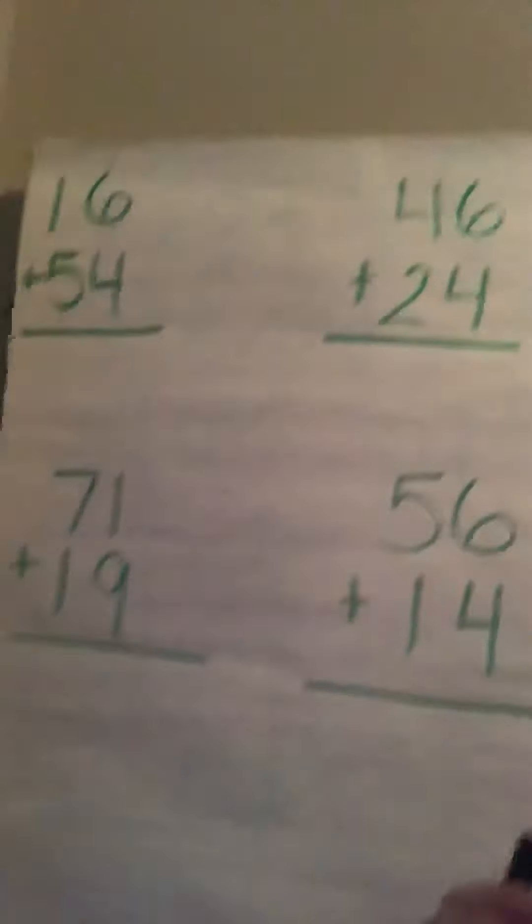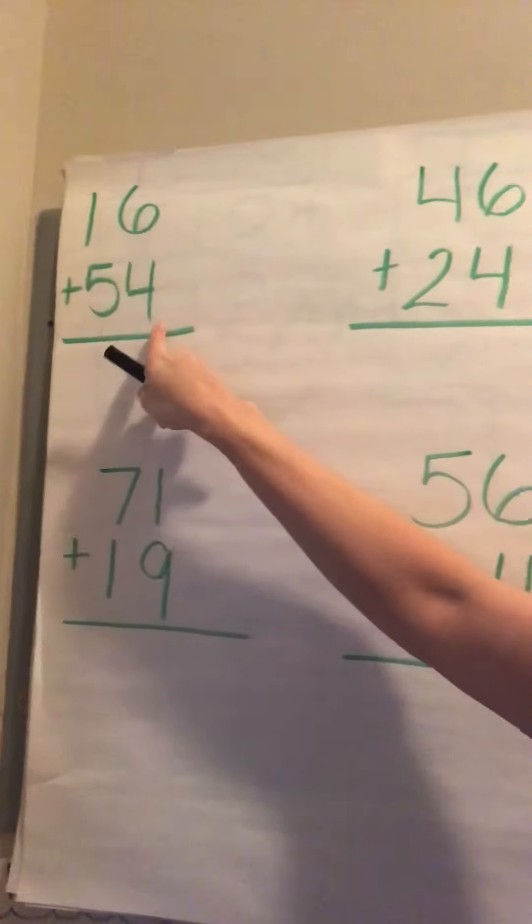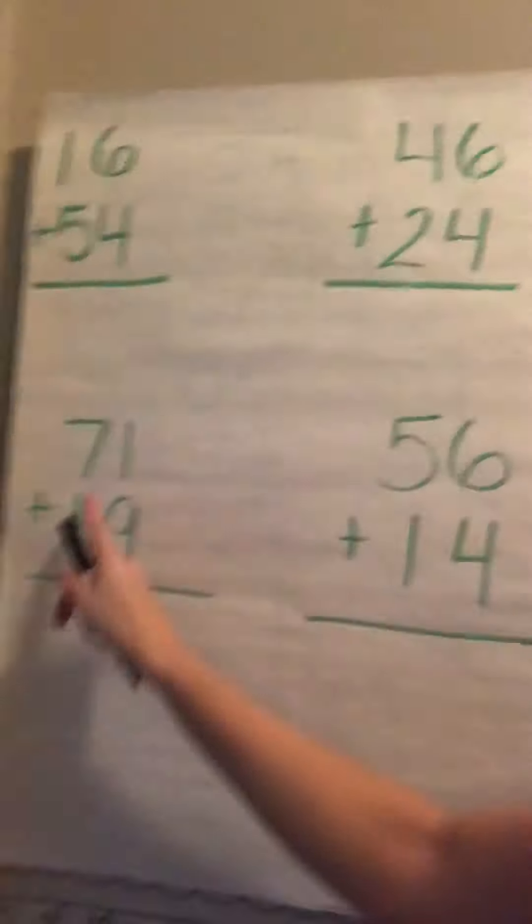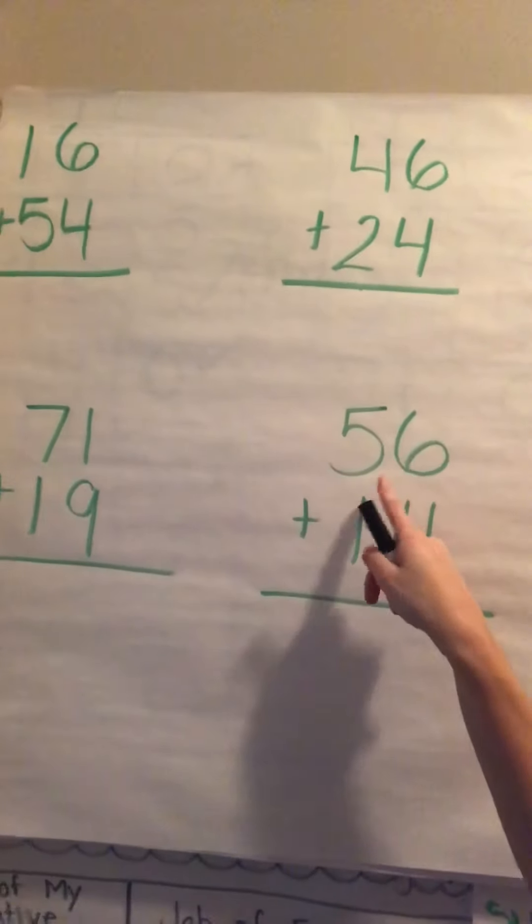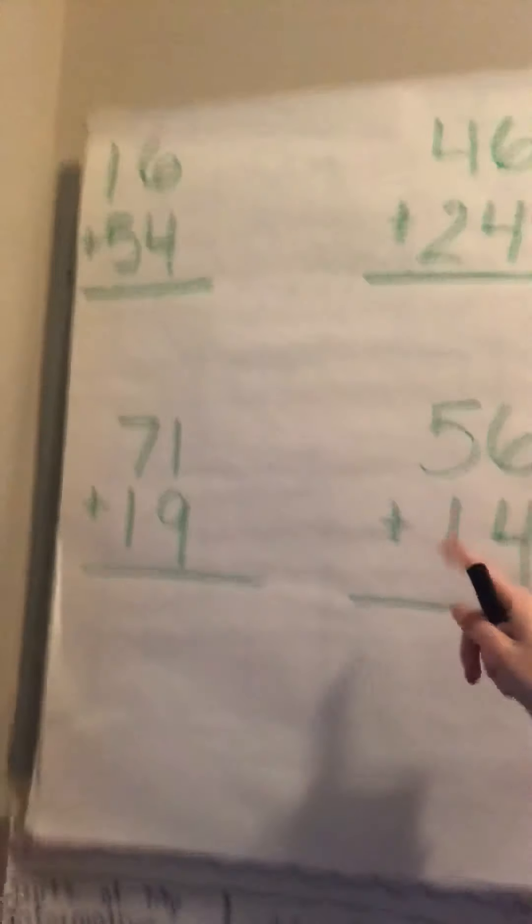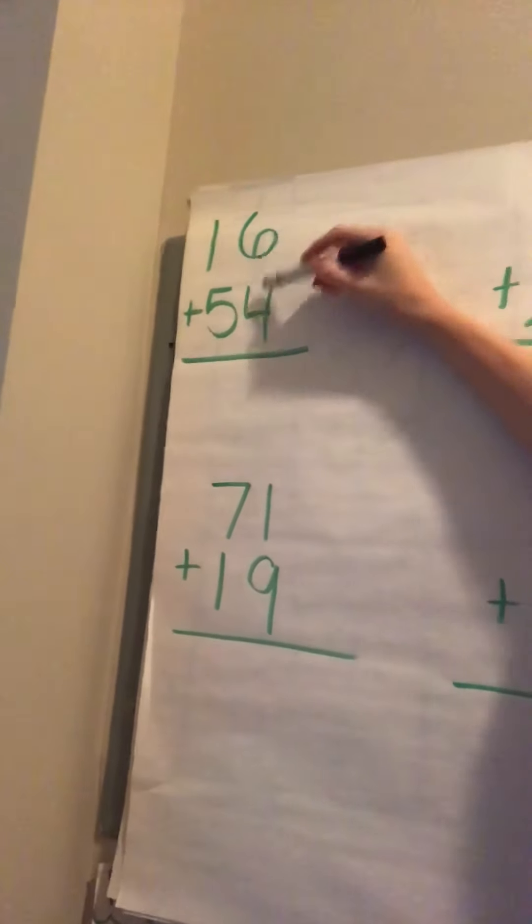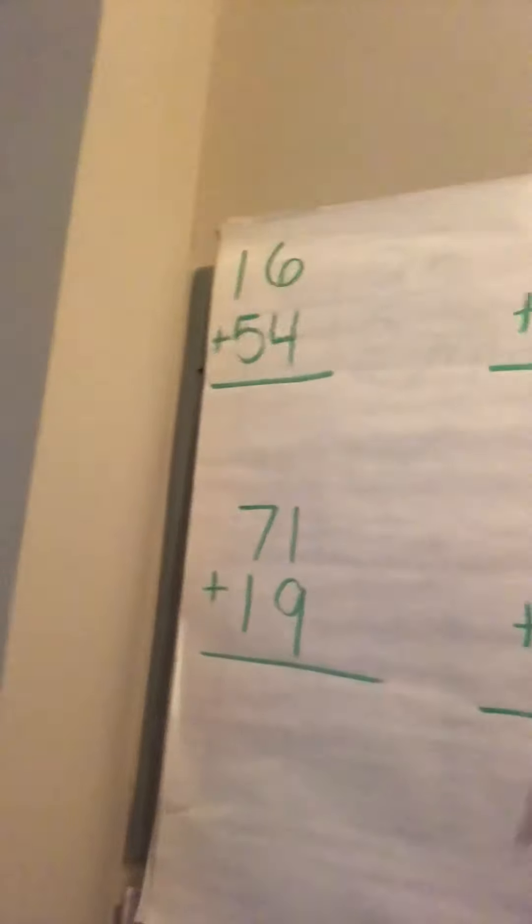Amazing job doing those problems together. Now what I need you to do is these 4 problems on your own. So you have 16 plus 54, 46 plus 24, 71 plus 19, and 56 plus 14. And remember when you're adding these you start on your right side, your ones place first. And don't forget to carry that tens place. Can't wait to see your hard work.